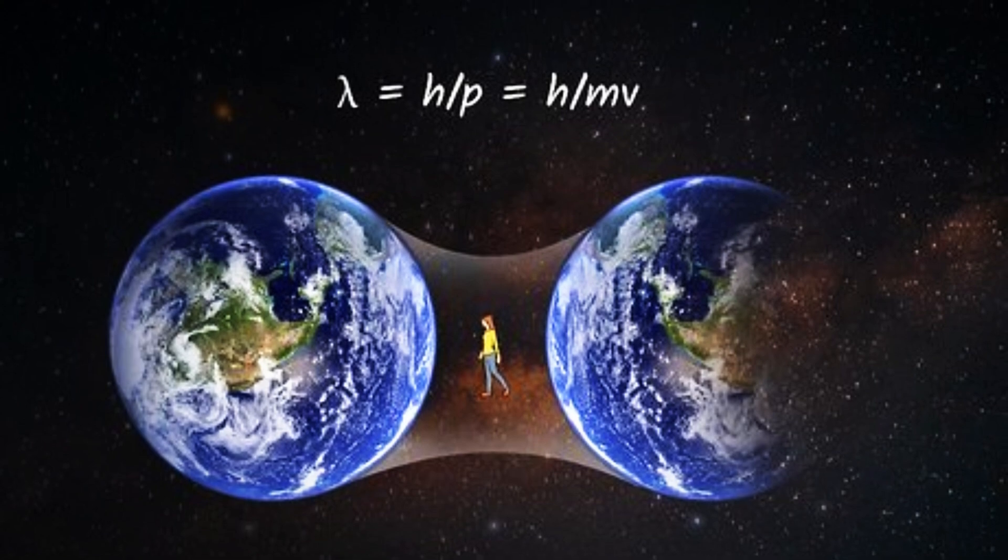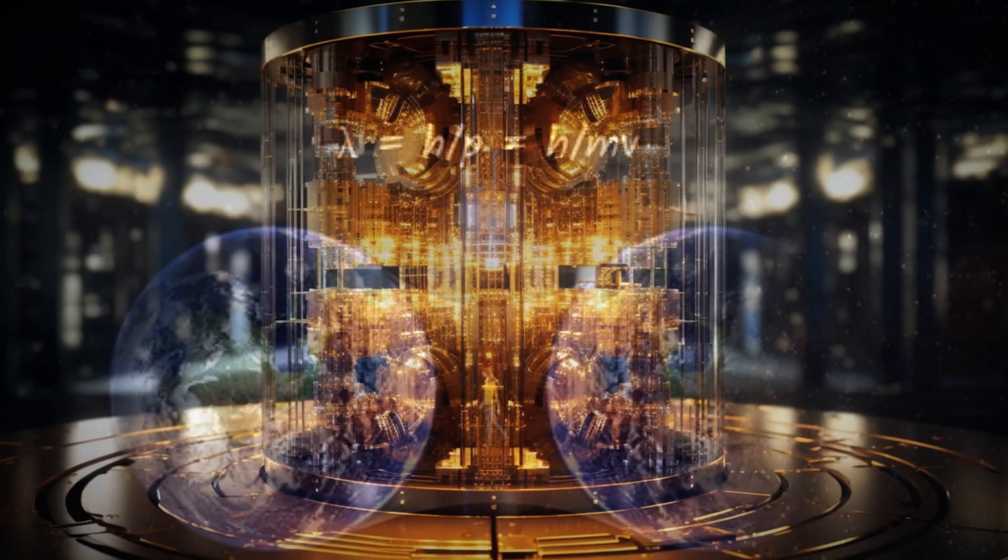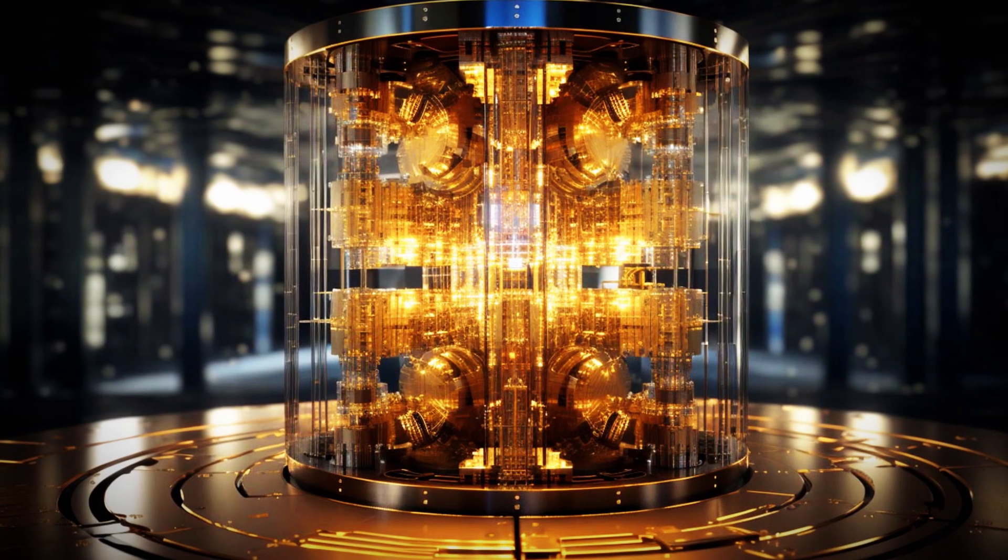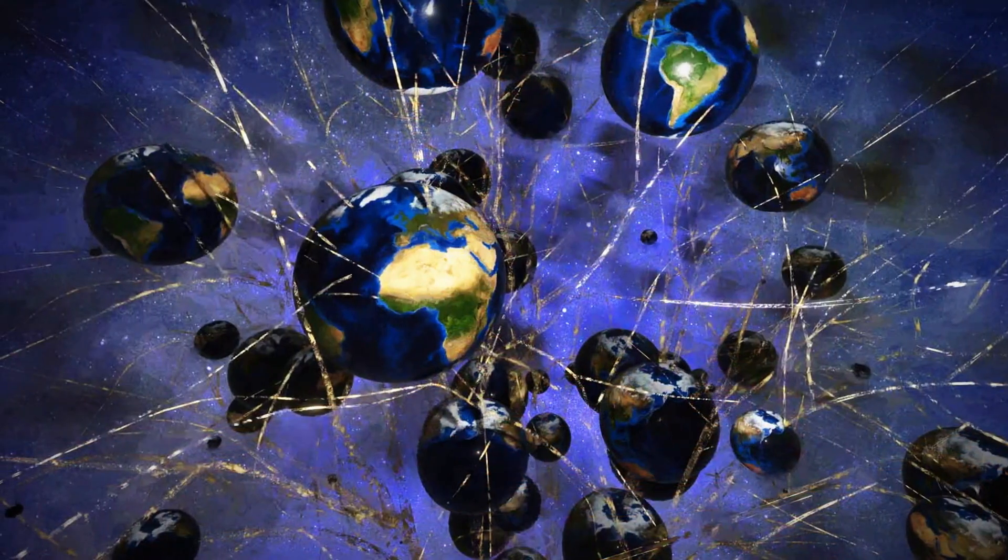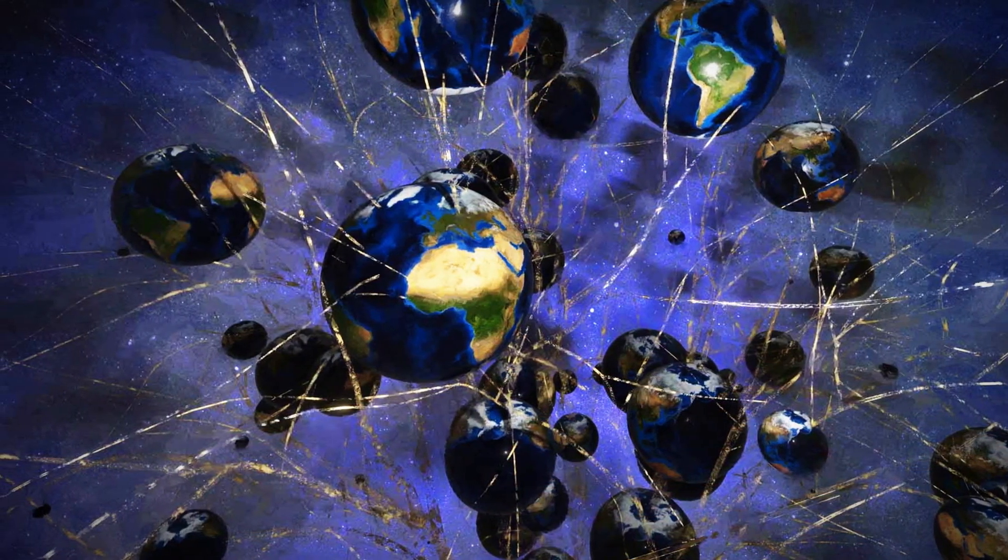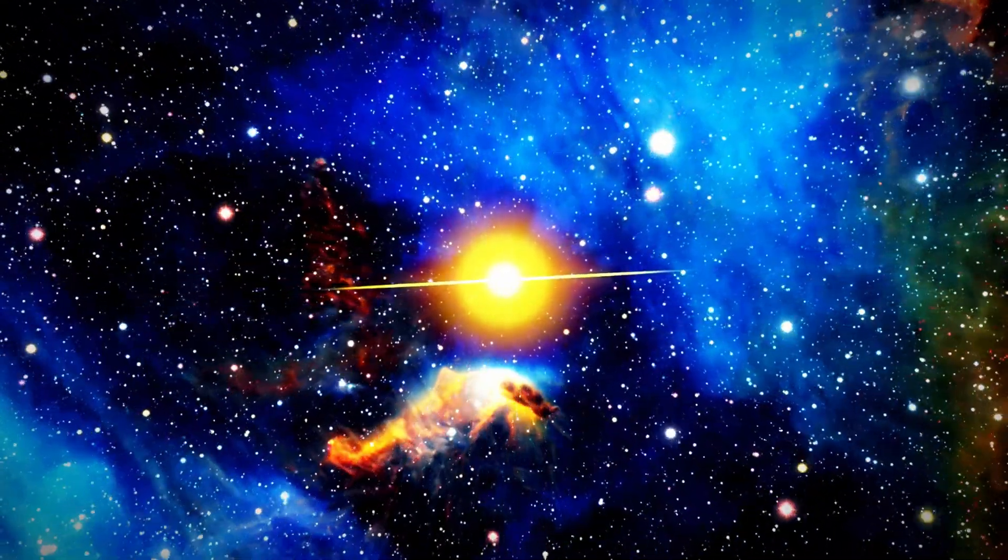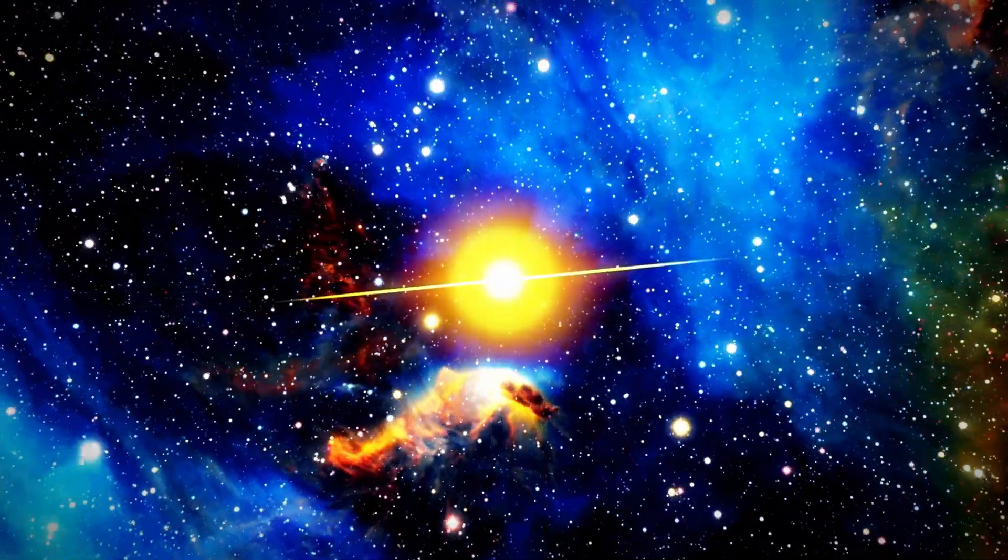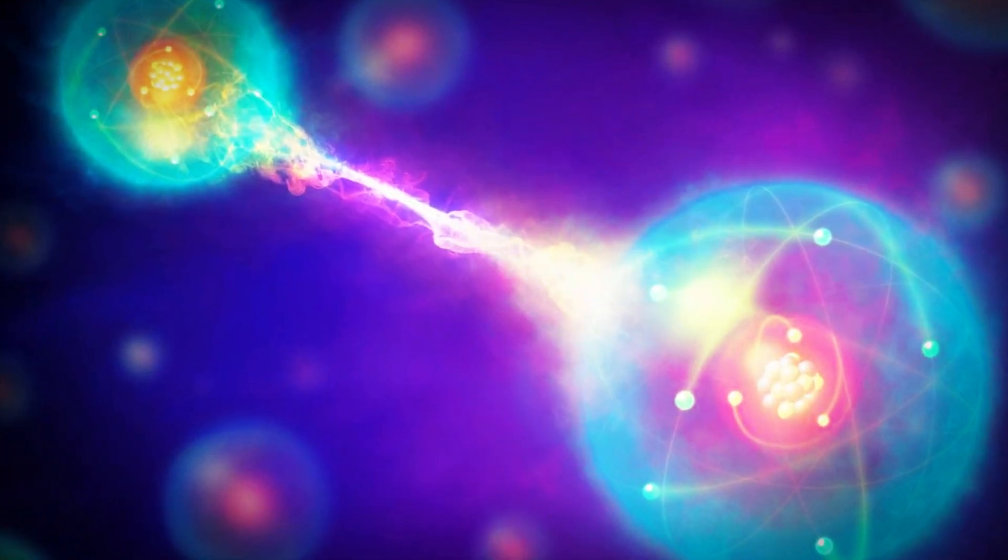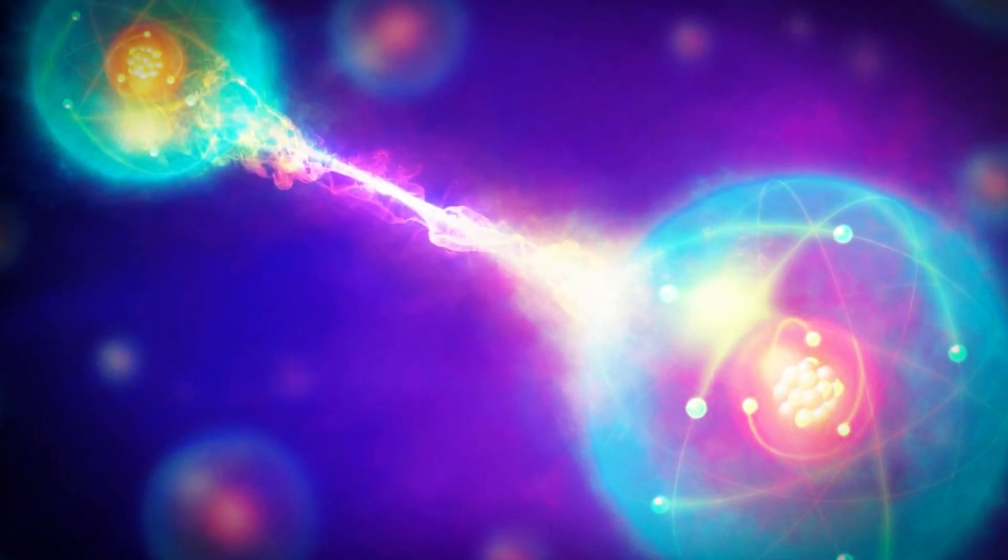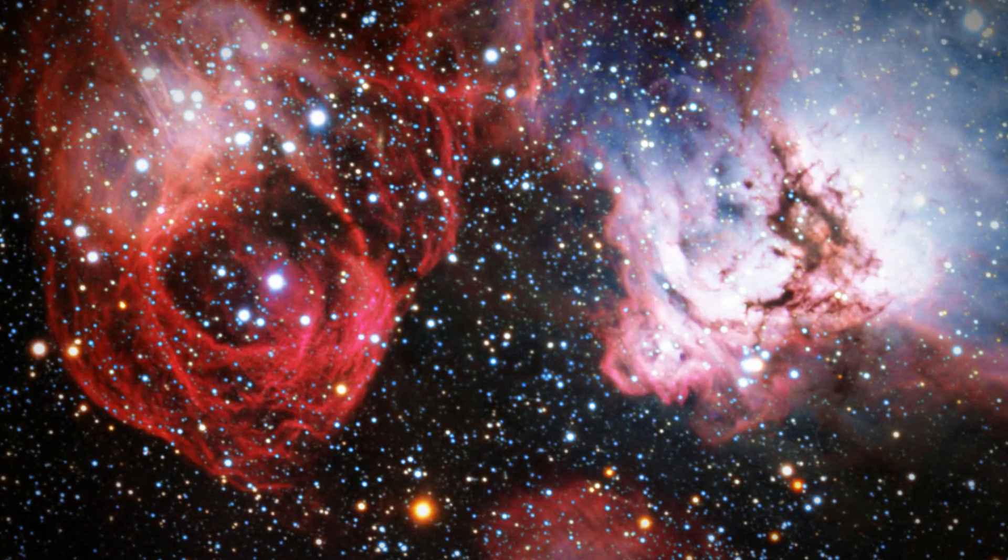So, for every decision made, a new parallel universe is created to accommodate the outcome. For instance, in the case of a simple quantum decision, such as whether a particle is in one state or another, the many-worlds interpretation would propose that there isn't a single result. Instead, there would be two universes created, one where the particle is in state A and one where it's in state B. This implies that every time a quantum event occurs, it spawns a new universe with its own version of reality, creating a constantly expanding multiverse.